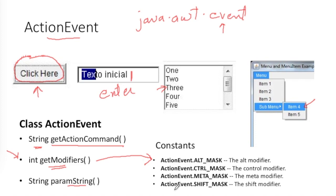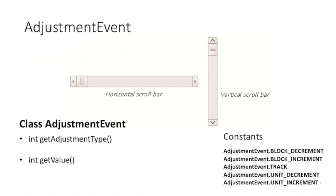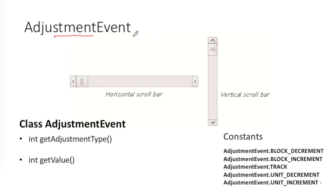Next is AdjustmentEvent, which is generated when you click anywhere on a scroll bar. There is a built-in AdjustmentEvent class available in the event package. Two important methods of this class are getAdjustmentType() and getValue(). When you define a scroll bar, you define a minimum and maximum value — for example, 0 to 100. getValue() returns the current position of the thumb tracker.